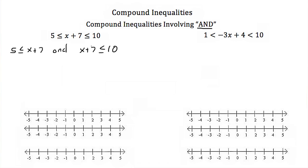Now we can solve each one of these individually. For the first one, we would just subtract 7 from both sides, and we would get negative 2 needs to be less than or equal to x. And if we solve the other one, we have x plus 7 is less than or equal to 10. Again, we subtract 7 from both sides, and we would get x is less than or equal to 3.